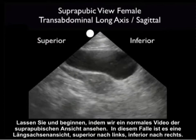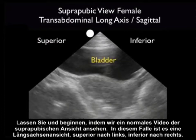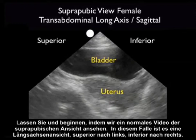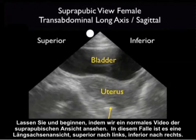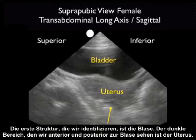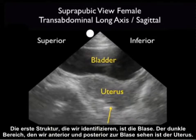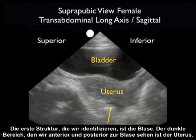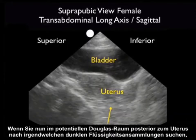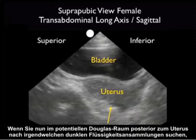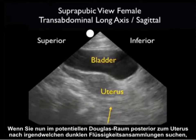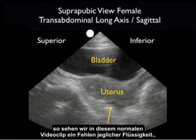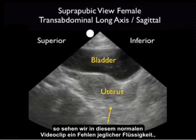Let's begin by looking at some normal video from the suprapubic view — in this case a long axis view in a female, with superior to the left and inferior to the right. The first structure we identify is the bladder, the dark area anteriorly, and posterior to the bladder we see the uterus. Looking into the pelvic cul-de-sac posterior to the uterus for any dark fluid collections, we see an absence of any fluid on this normal video clip.